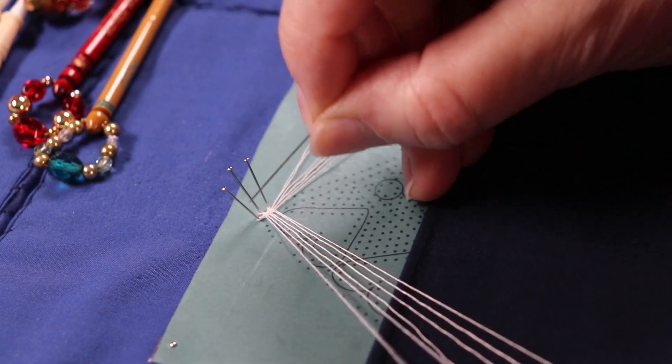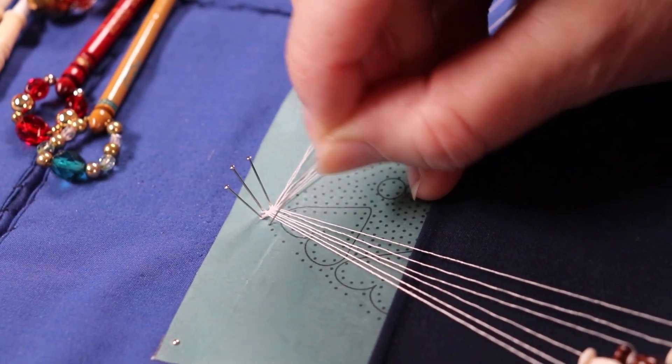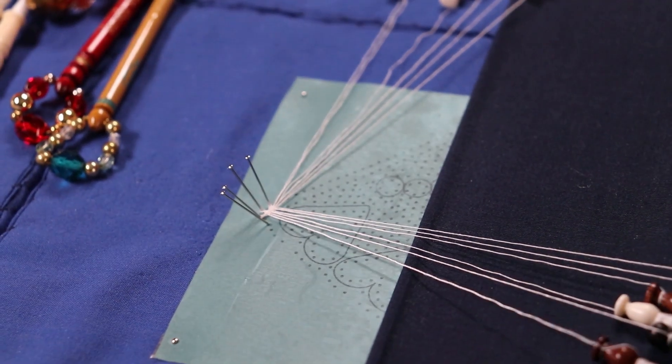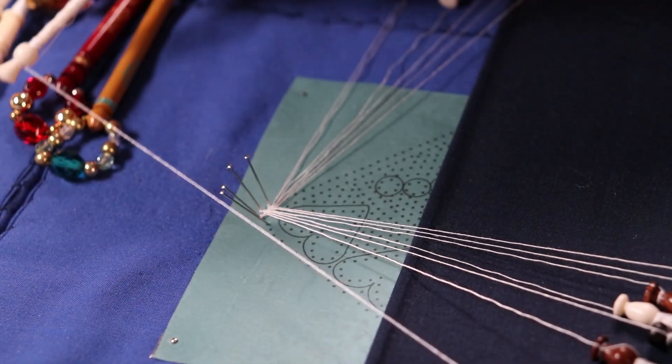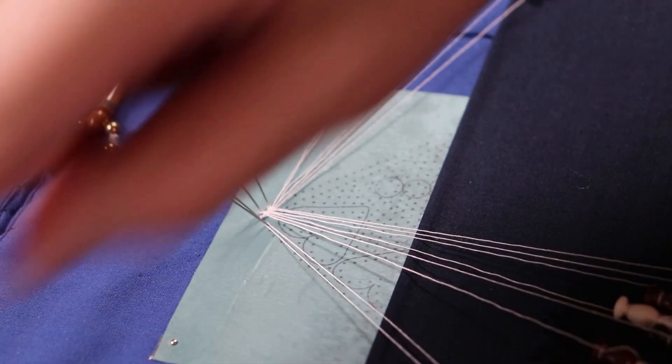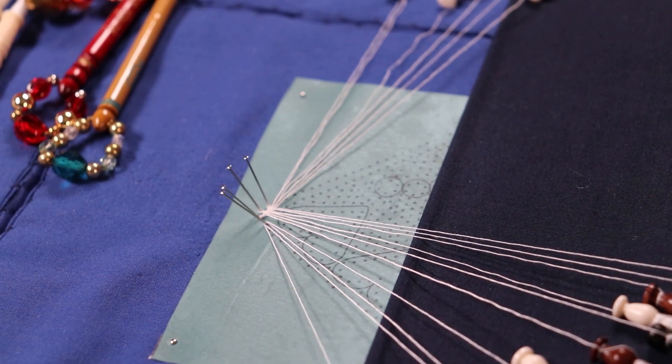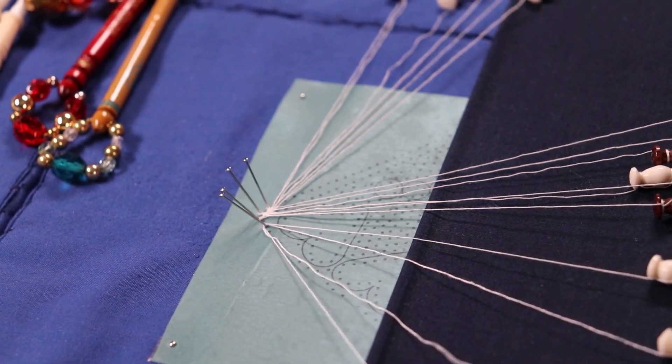Having tensioned those up nicely, we're now going to put another false picot on the bottom edge, which is the shaped scalloped edge. This is going to provide your workers for this bottom edge and feed into the heart shape inside the gimp.